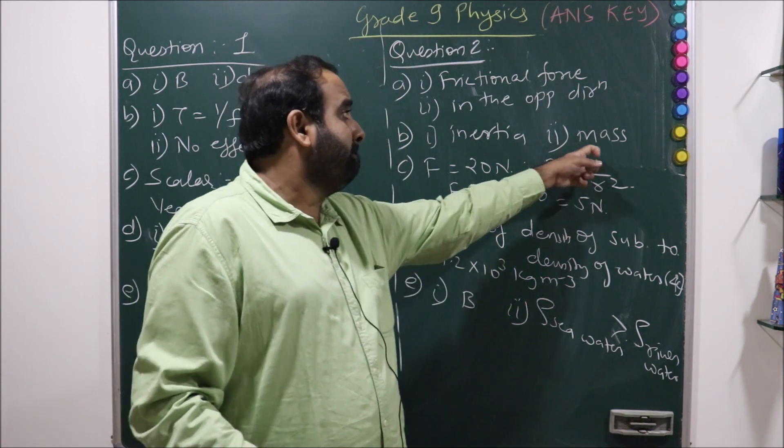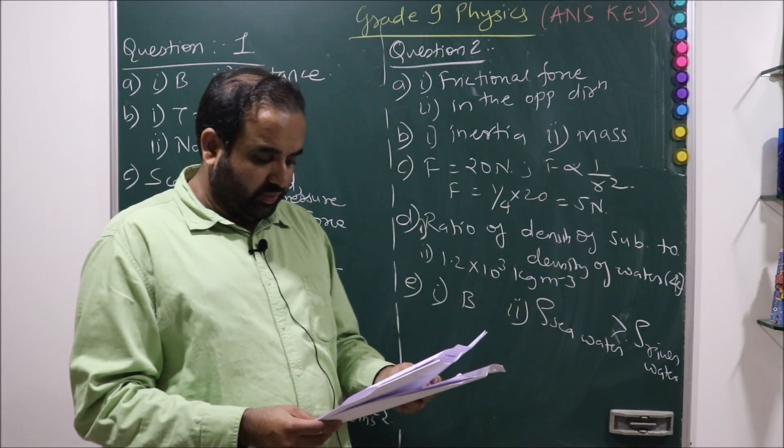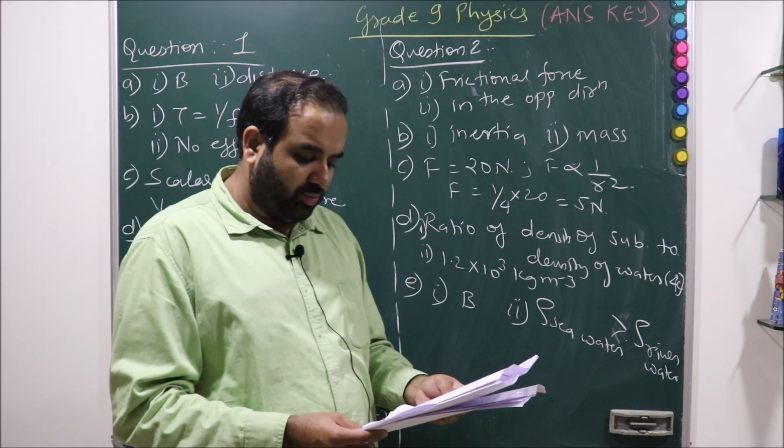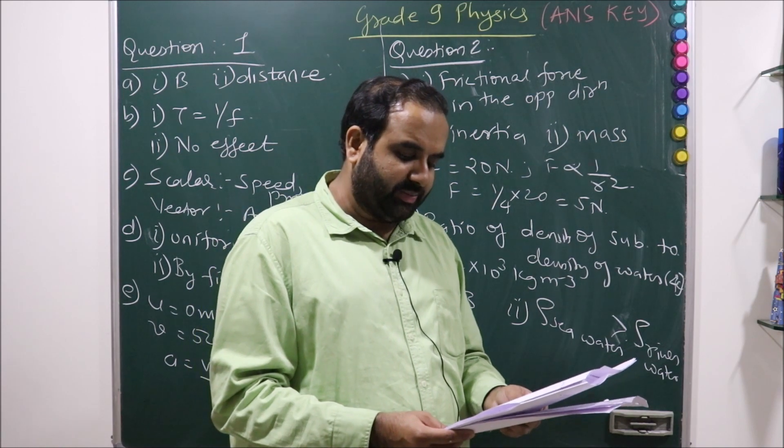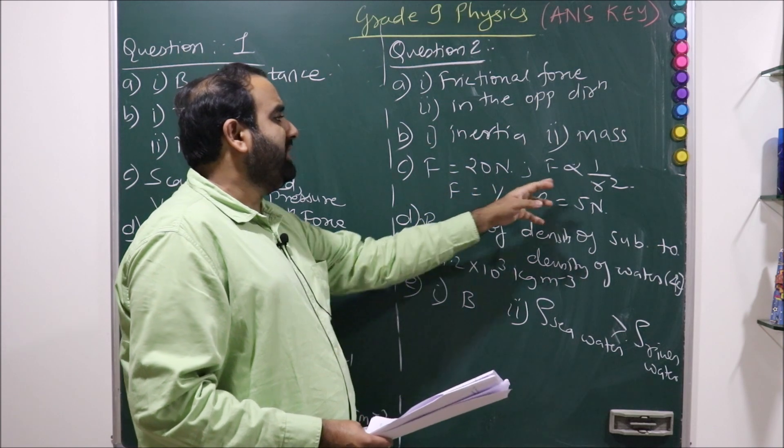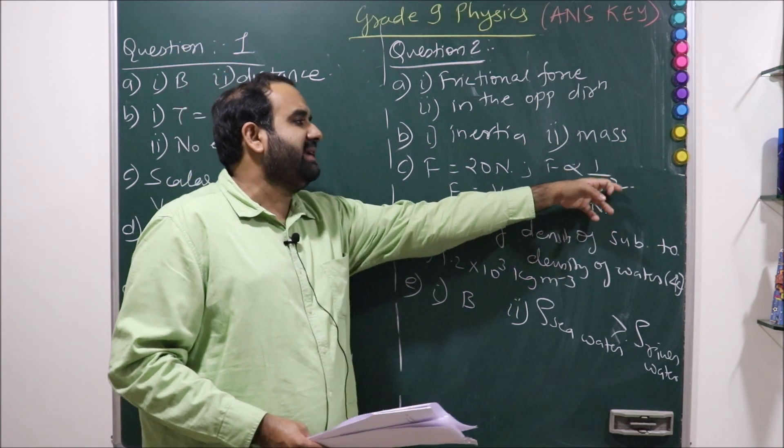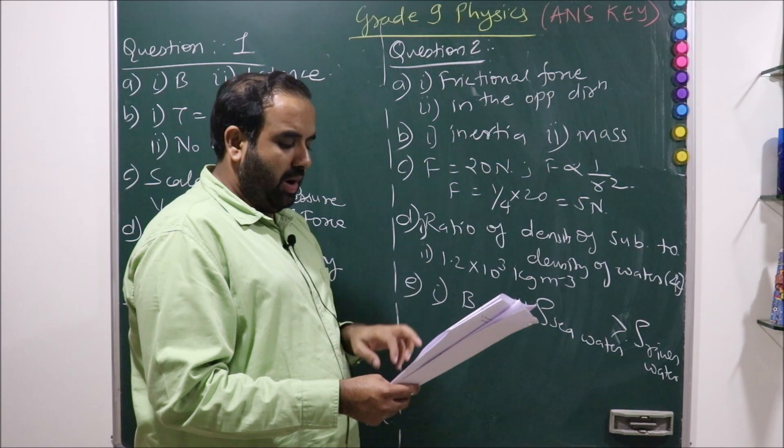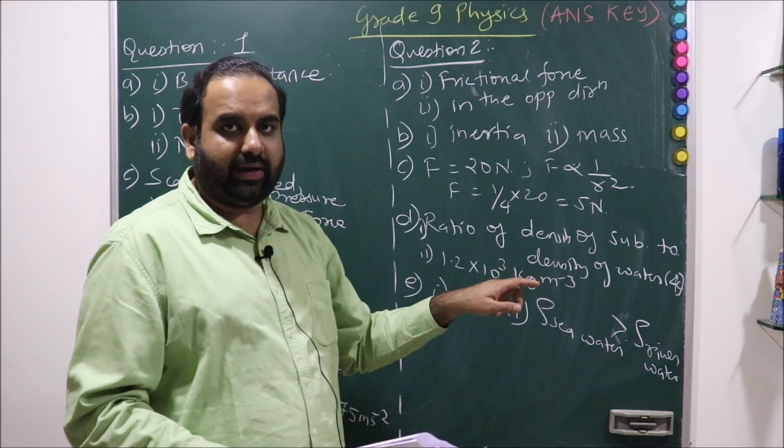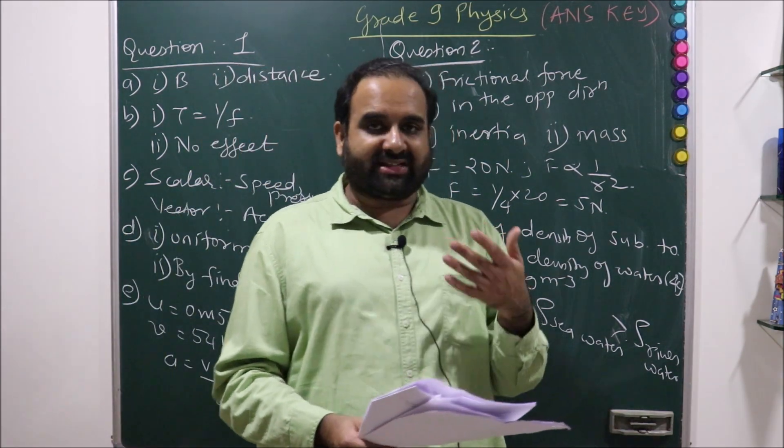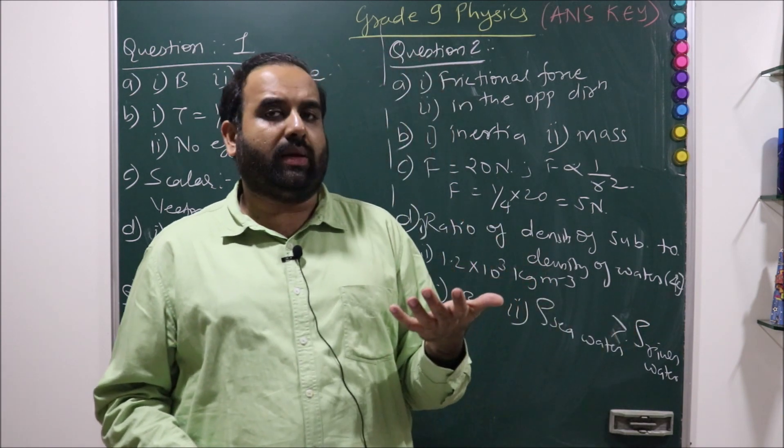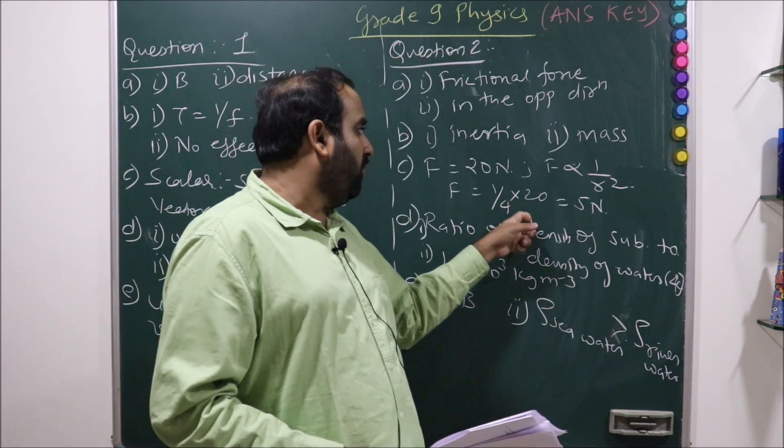The gravitational force of attraction between two bodies at a distance x is 20 newton. What will be the force of attraction between them if the distance between them is made 2x? Force is 20 newton. We all know that the force is inversely proportional to the square of the distance. Initially the distance was x, so 1 upon x square. If I'm making it 2x, it will be 1 upon 2x whole square, which becomes 1 upon 4. So 1 upon 4 into 20, the force becomes 5 newtons.